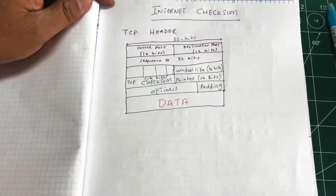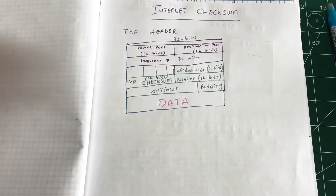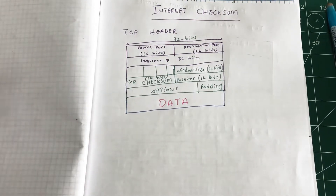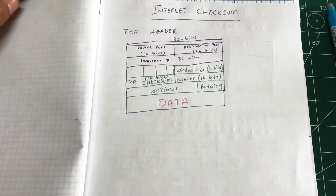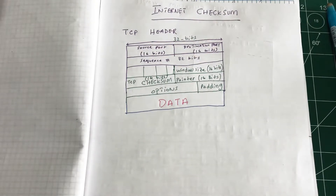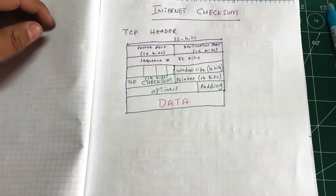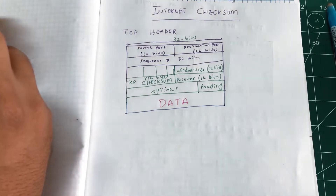In TCP/IP we looked at cyclic redundancy check and forward error correction codes like Hamming codes. Error correction and detection is a job of the link layer, but what about when data is traveling from the application layer down through transport, network, and data link layers? Within those layers, how do we check if an error has occurred? The way we do it is using something called an internet checksum.